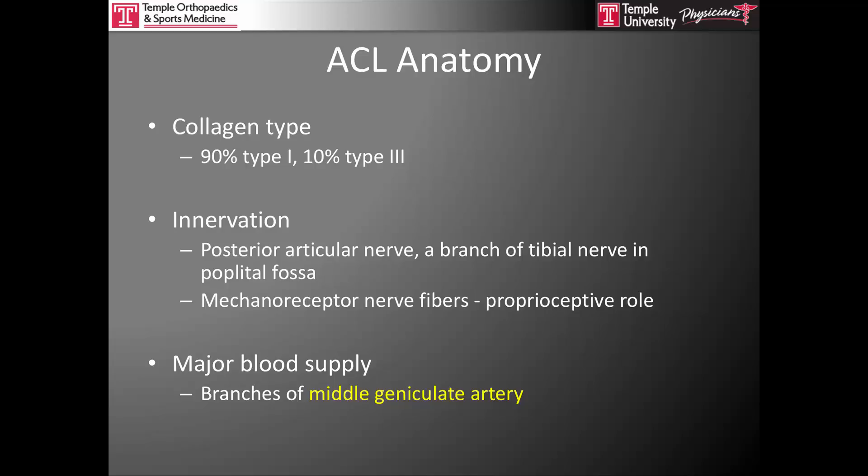The anterior cruciate is made up of 90% type 1 collagen and 10% type 3 collagen, and is innervated by the posterior articular nerve, which is a branch of the tibial nerve as it traverses the popliteal fossa. The anterior cruciate also has mechanoreceptors, which help it in its proprioceptive role in giving neural feedback to the brain about where the knee is in space.